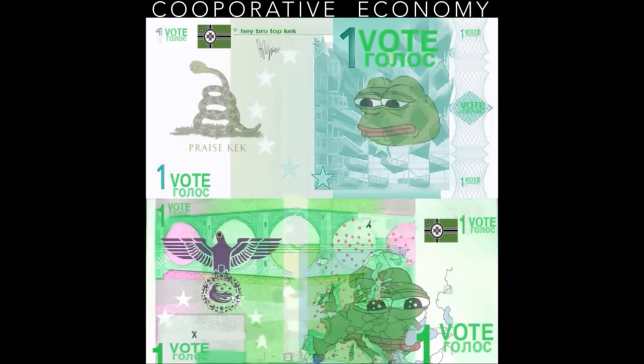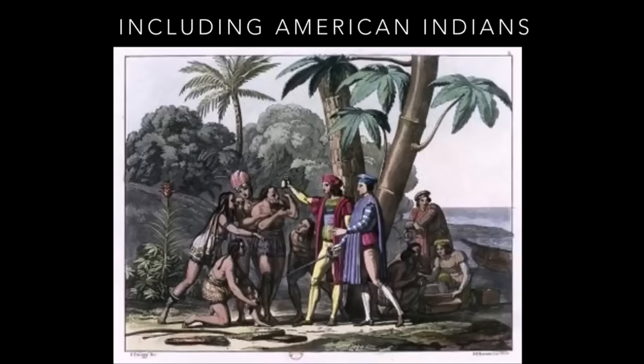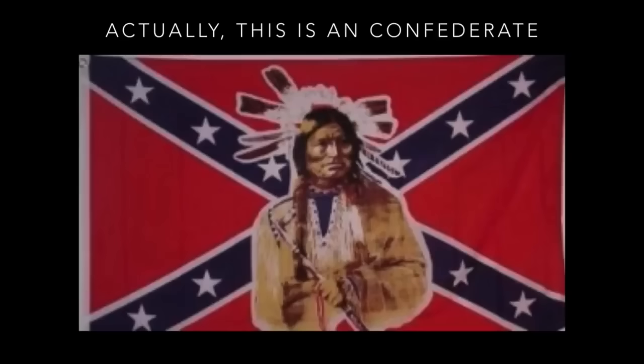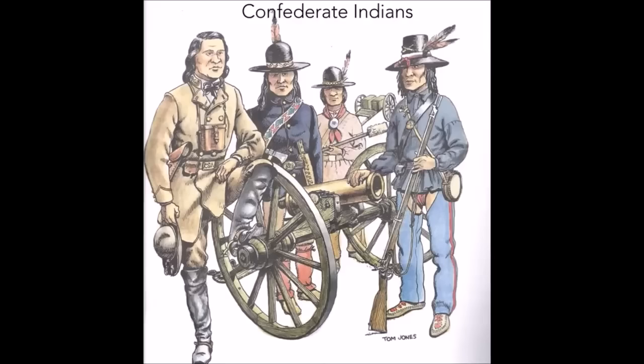So let's get into the economy of Tartaria, because what's interesting is this idea that it was an international agreement across many nations, including American Indians, who were a confederacy. And when I say confederacy, they had chiefdoms, but they were literally part of the confederacy, fought on the South, and kept slaves themselves. So it's an interesting part that we'll get into.